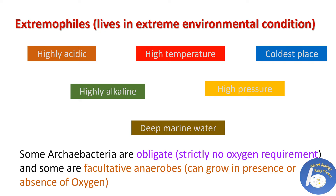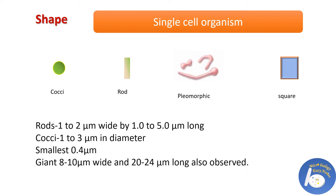Archaebacteria are single-cell organisms. Their shapes can be cocci, rod, pleomorphic, or even square. Rod-shaped archaebacteria are 1 to 2 micrometers wide and 1 to 5 micrometers long. Cocci-shaped archaebacteria are 1 to 3 micrometers in diameter. The smallest archaebacterium known is 0.4 micrometers, and the giant size known is 8 to 10 micrometers wide and 20 to 24 micrometers long.